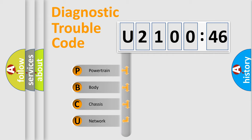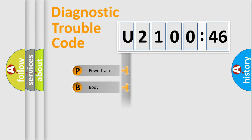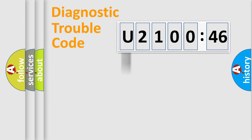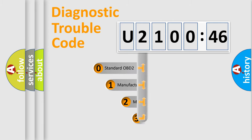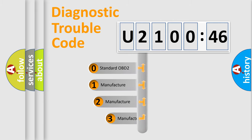We divide the electric system of the automobile into four basic units: Powertrain, Body, Chassis, and Network. This distribution is defined in the first character of the code.